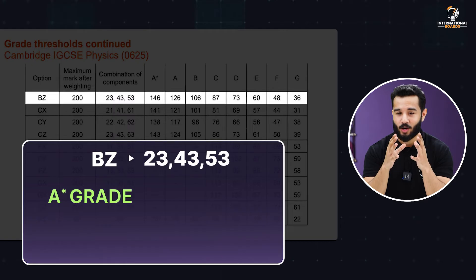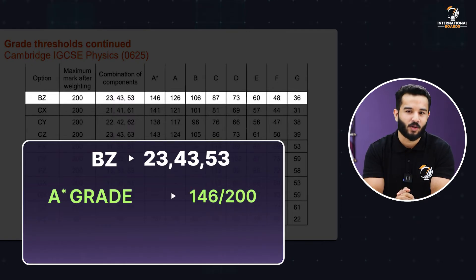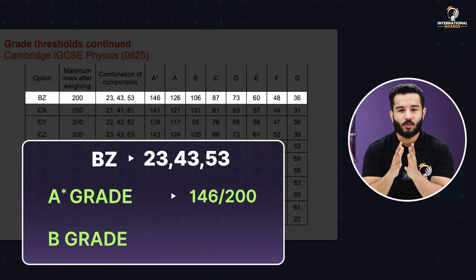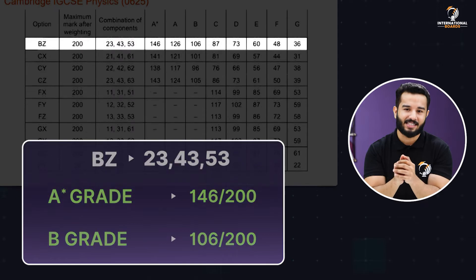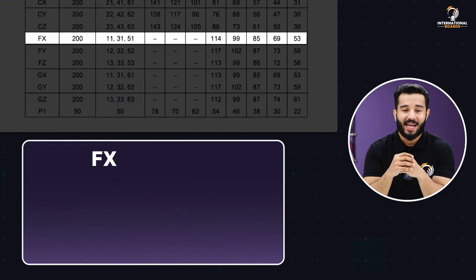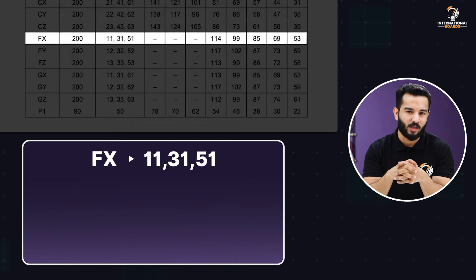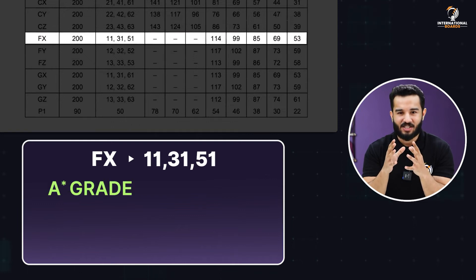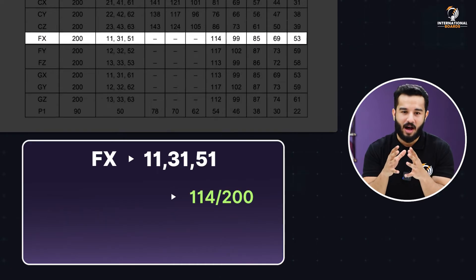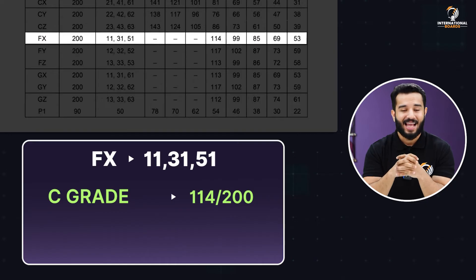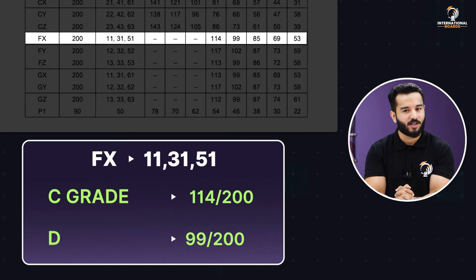To get an A-star overall in the BZ option, you need at least 146 marks out of 200. To get a B grade, you need 106 marks. Now let's take another example — the FX option, which includes components 1-1, 3-1, and 5-1. Here, the A-star, A, and B grades are not available. You need at least 114 marks to achieve a C grade, and 99 marks for a D grade.